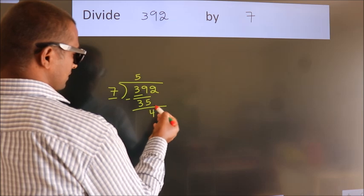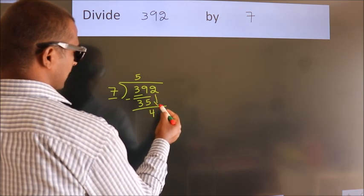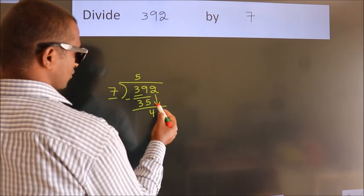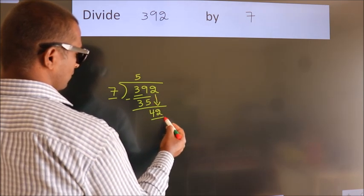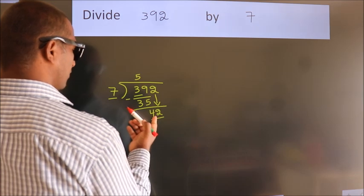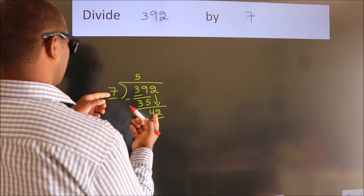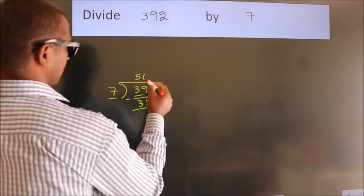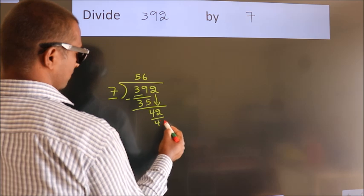After this, bring down the beside number. So 2 down, so 42. When do we get 42? In the 7 table, 7 sixes, 42.